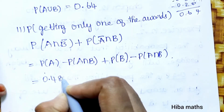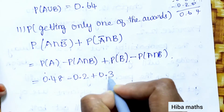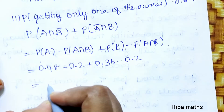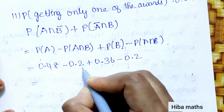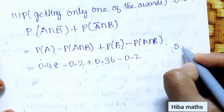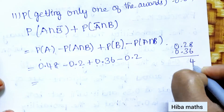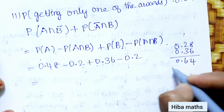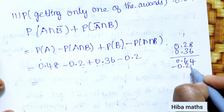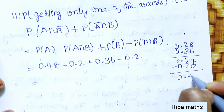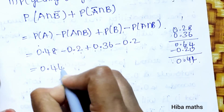P(only one award) = (0.48 − 0.20) + (0.36 − 0.20) = 0.28 + 0.16 = 0.44. So the probability of getting only one of the two awards is 0.44.